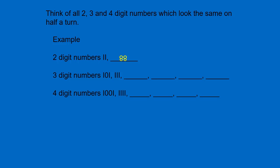Let us go to the 3 digit numbers. 808 — yes, it looks the same. 181 — let us check. It looks the same. 808 looks the same. 818 looks the same.